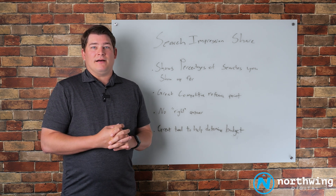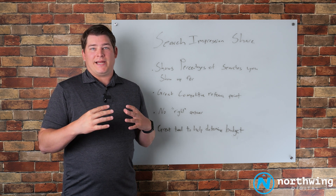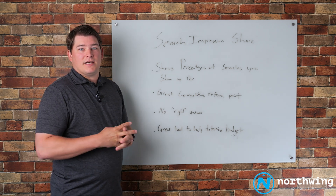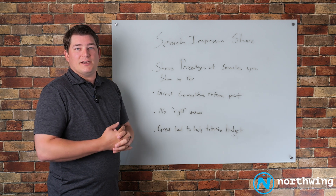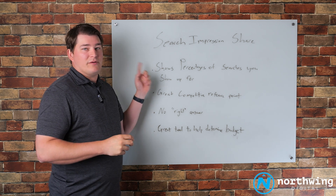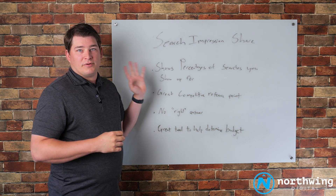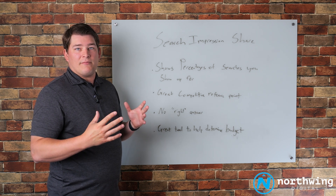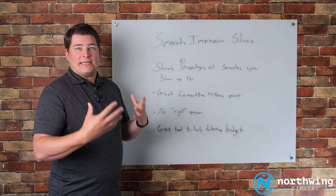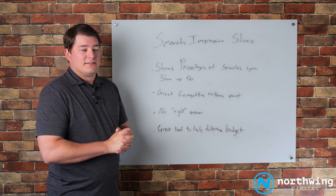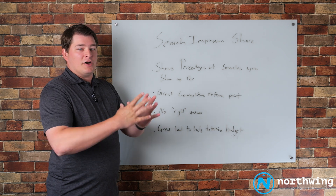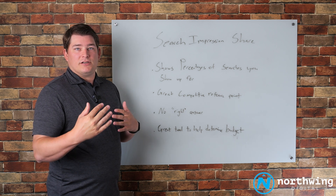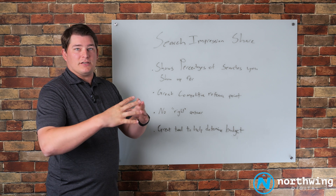How much could you spend? Here we're going to talk about what I believe is one of the most underrated or underutilized metrics to help determine this — and that is search impression share. Sometimes you have to enable it as a column in your Google Ads dashboard, as it doesn't always show up by default. Essentially, search impression share tells you the percentage of searches that your site is showing up for, for the ad groups, keywords, and campaigns you've decided to run.